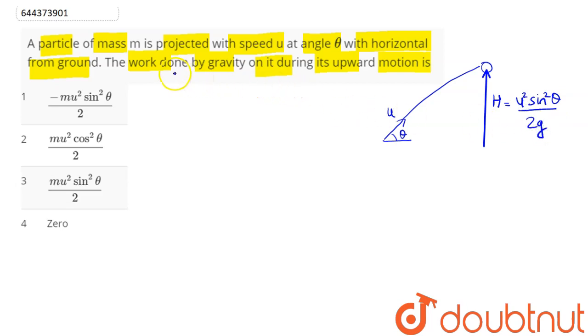The angle between the force and displacement is 180 degrees. So force magnitude is mg, displacement magnitude here is u square sine square theta divided by 2g, and cos 180 is minus 1.